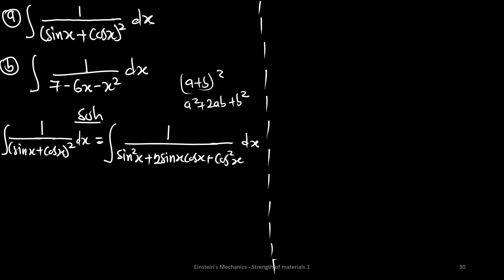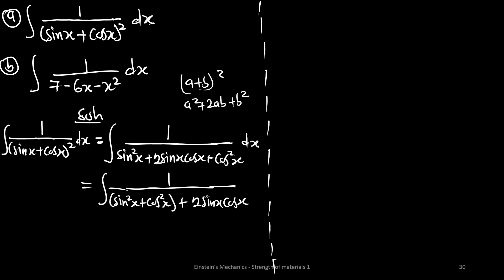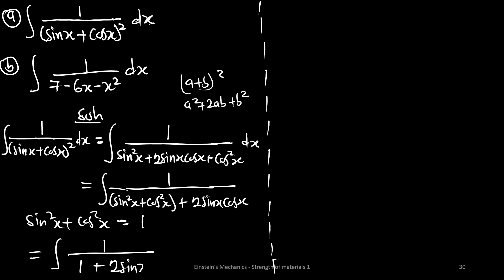This can be simplified as the integral of 1 on (sin²x + cos²x + 2 sin x cos x). From the identity we know that sin²x + cos²x equals 1. So we can substitute that in, giving us the integral of 1 on (1 + 2 sin x cos x) dx.